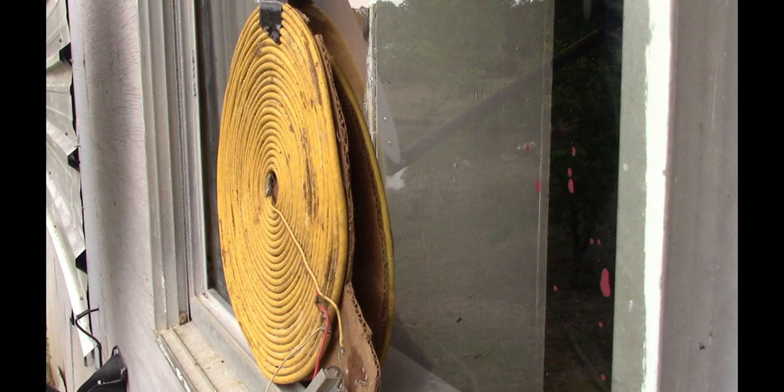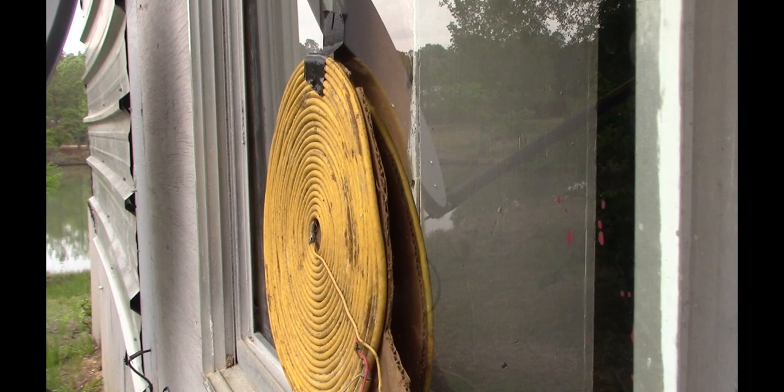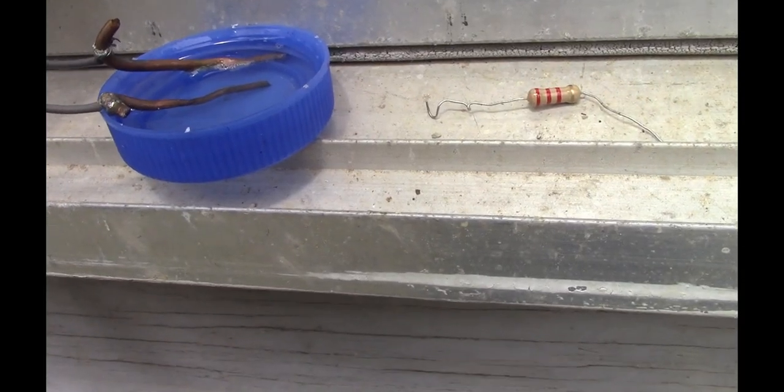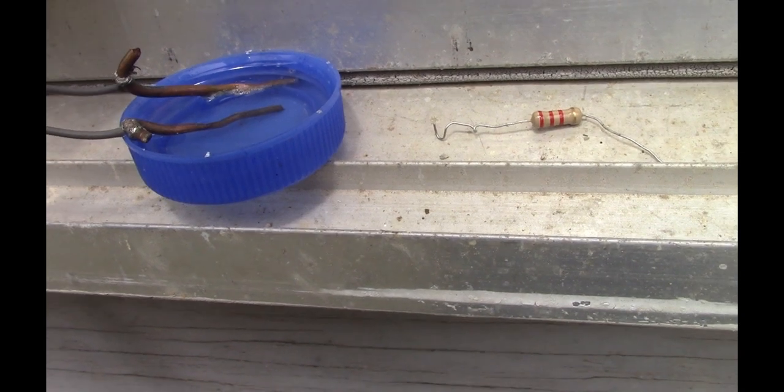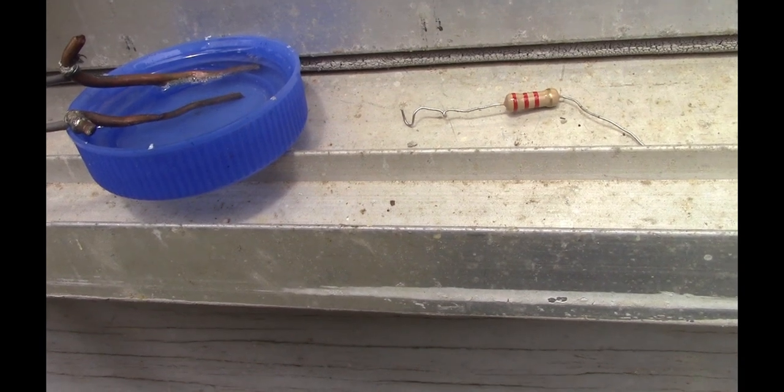Then came the next problem - it kept falling off the window, so I've used a bit of tape on there. Nothing a couple of suction things couldn't sort out, but I haven't got any of those. The next problem was immediate - that resistor on the right is only a quarter watt and it overheated and failed very quickly.